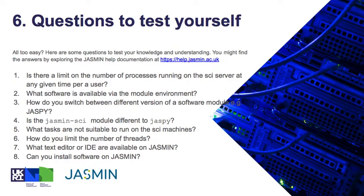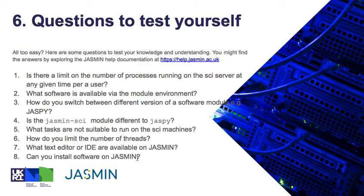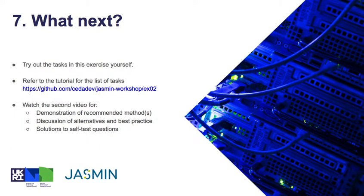This brings us to the review questions added in this exercise. If you manage to go through the five sections of the task, it would be good to test your knowledge and understanding by looking at these questions. They cover topics such as whether there is a limit on the number of processes, what software is available, how to switch between different versions of software, and whether you can install software on Jasmine. If you have tried the tasks and exercises, we invite you to watch the second video, which gives a demonstration of the recommended method, discusses alternatives and best practices, and gives solutions to the test questions.